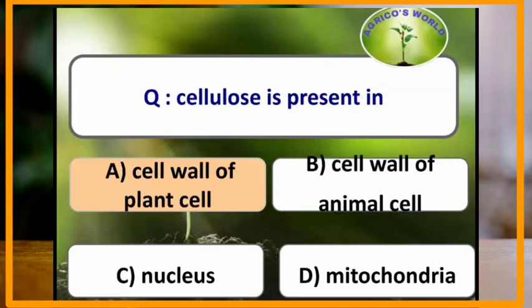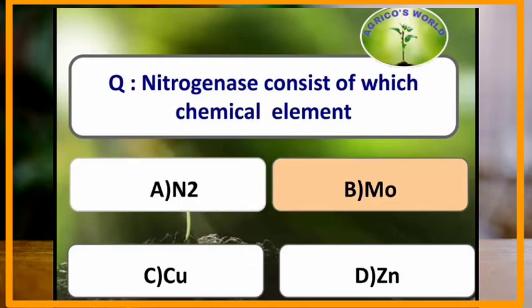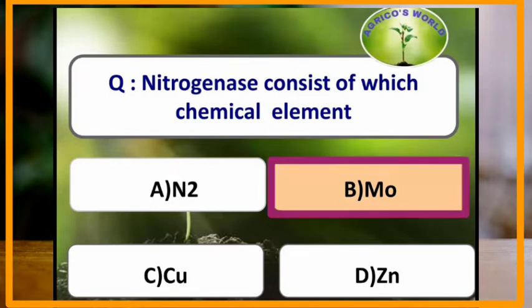Cellulose is present in which of the following? Cellulose is present in the cell wall of the plant cell. Nitrogenase consists of which chemical element? Nitrogenase consists of molybdenum.